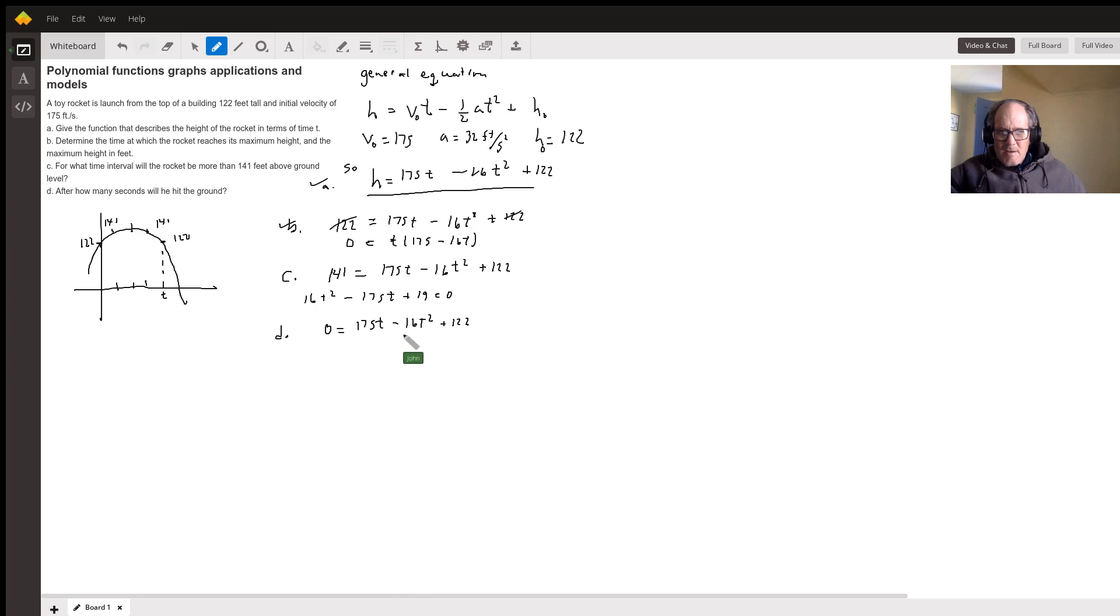Again, put that in order and either factor it or solve it using the quadratic, and you'll get two answers for zero. So one's this zero right here, the other is this zero right here,